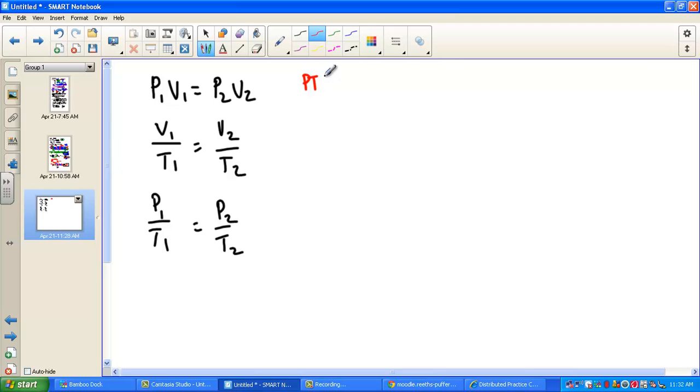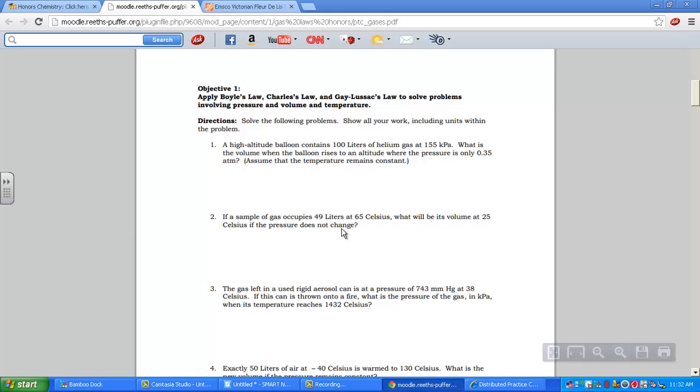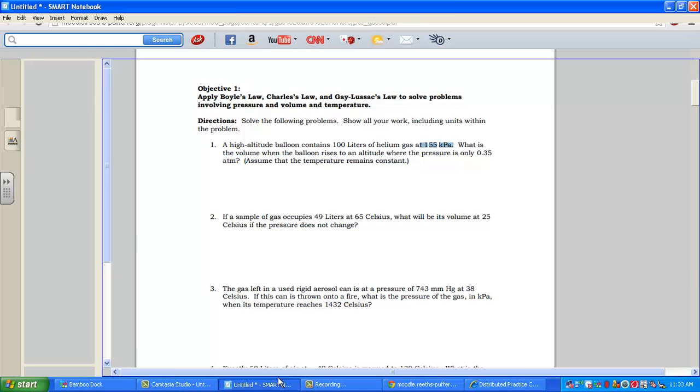Let's take a read through. This is practice test C, objective number one. Here's question one. We have a high-altitude balloon containing 100 liters of helium. Pressure is 155 kPa. What's the new volume if the balloon rises where the pressure is only 0.35 atmospheres? Well, I'm noticing I have an atmosphere on one and a kPa on another pressure unit. So we'll just have to decide to convert one to the other. It doesn't matter. We just have to be sure we have like units.